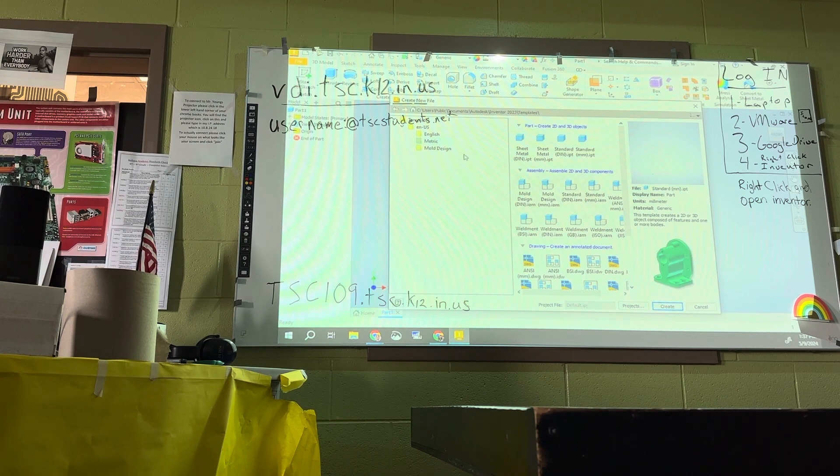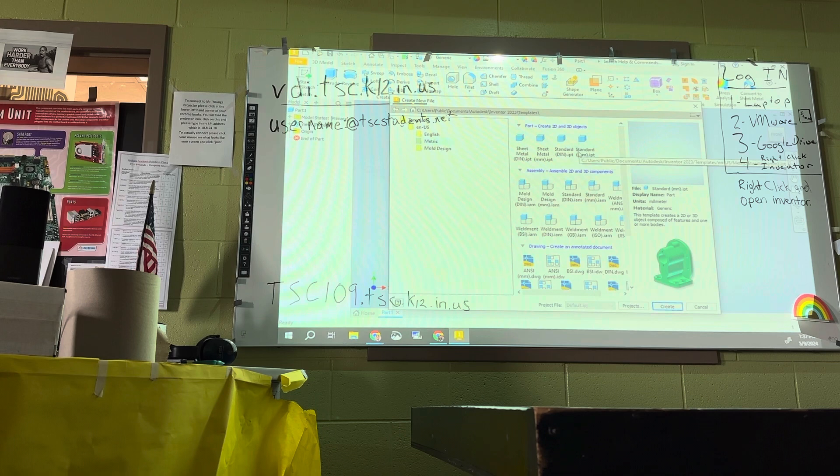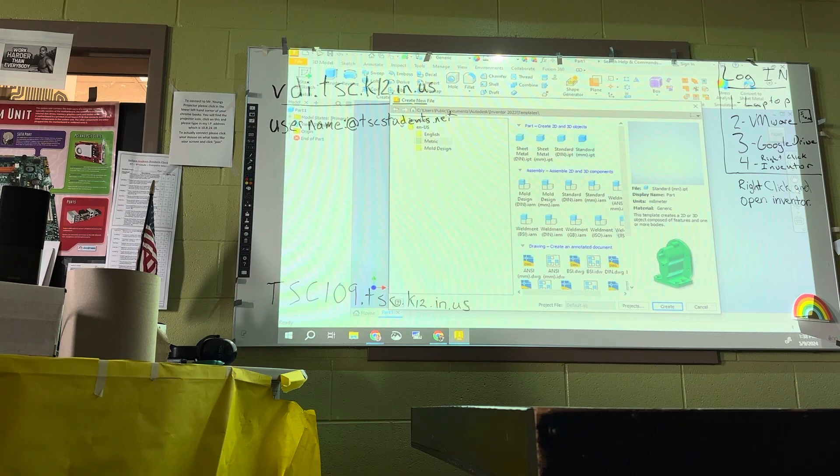Now, what do I want to do up here? Here, we have options, right? We have parts, we have assemblies, so if there's moving parts or multiple parts that you put together, right? We're going to pick something, this is very important, this part too. We're going to pick standard MMIPT, right here. And then, we are going to create.